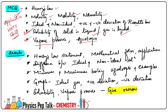For 2-marks questions: Henry's Law statement — state the law and give its mathematical form with application. Next, the difference between ideal and non-ideal solutions is a 2-marks question. Minimum and maximum boiling azeotropes with examples and graphs — ideal, positive deviation graph, and negative deviation graph. Next, solubility questions and give-reasons questions are very important for 2-marks.